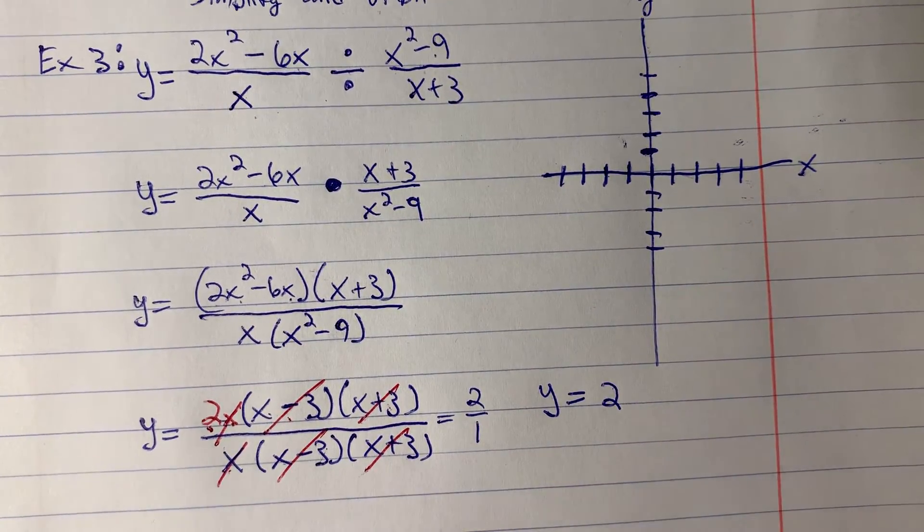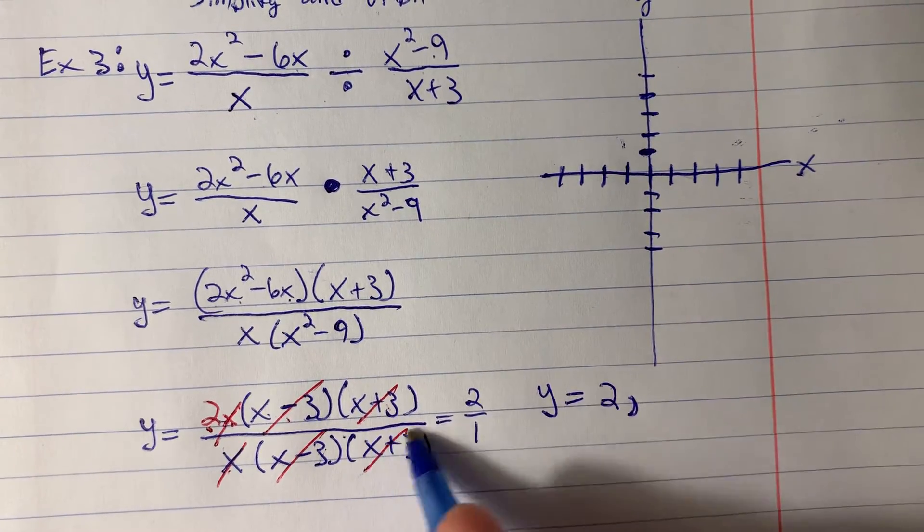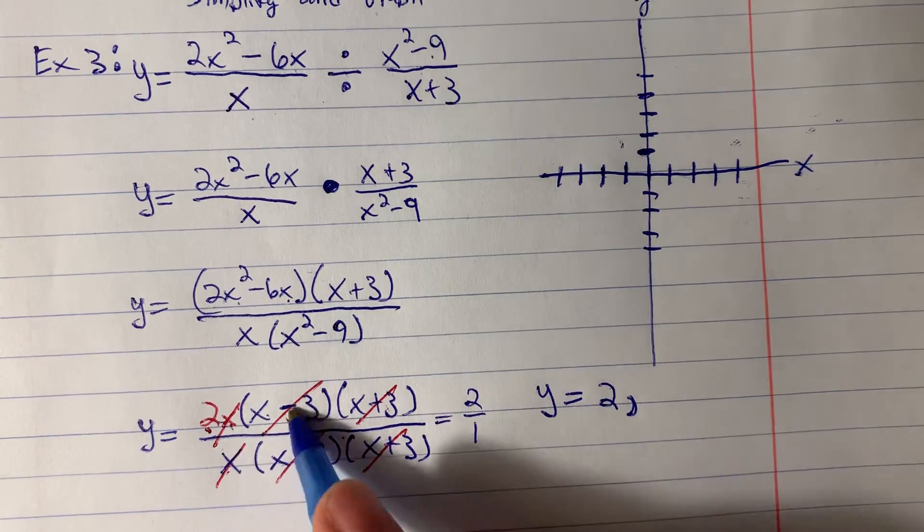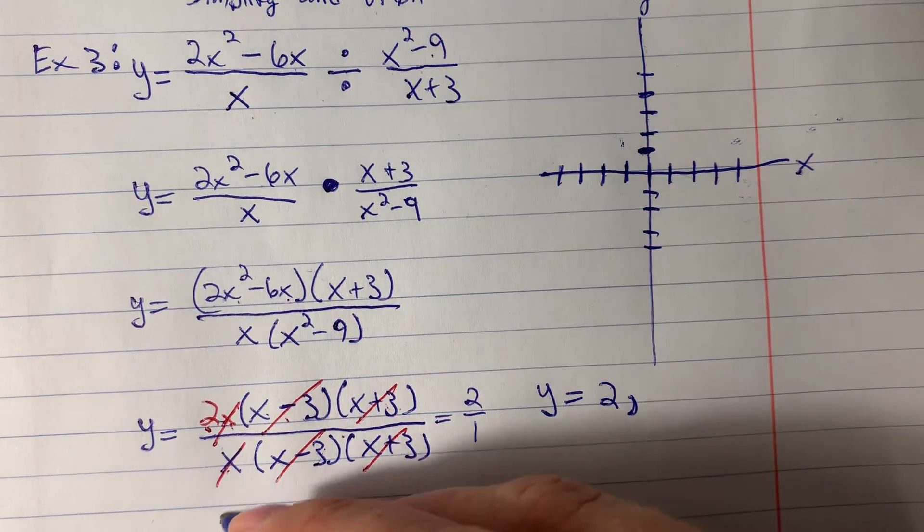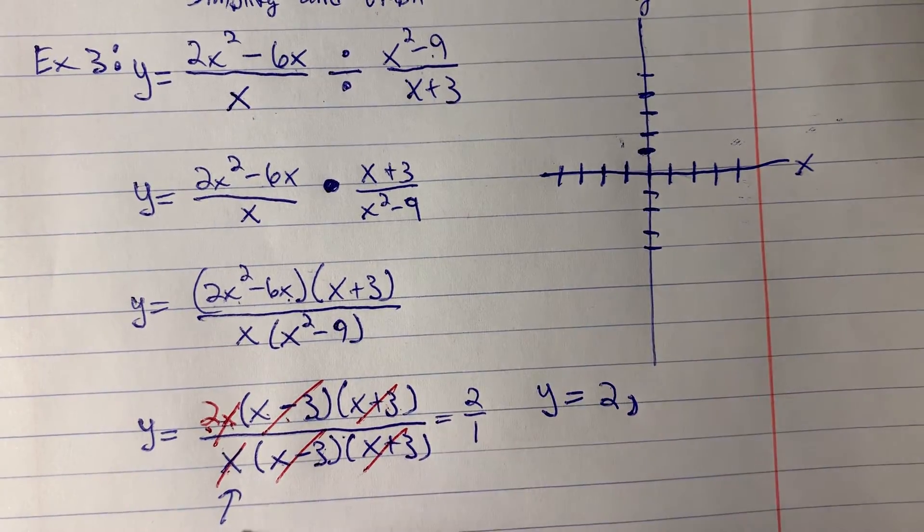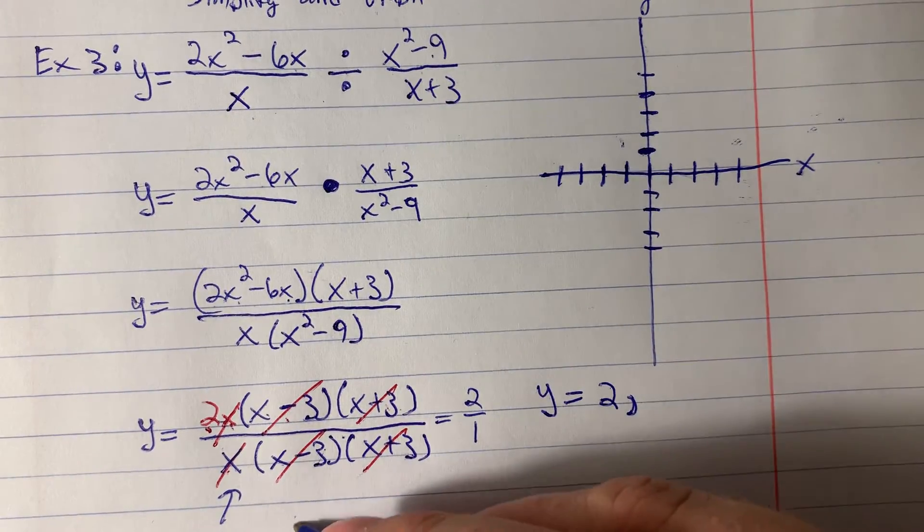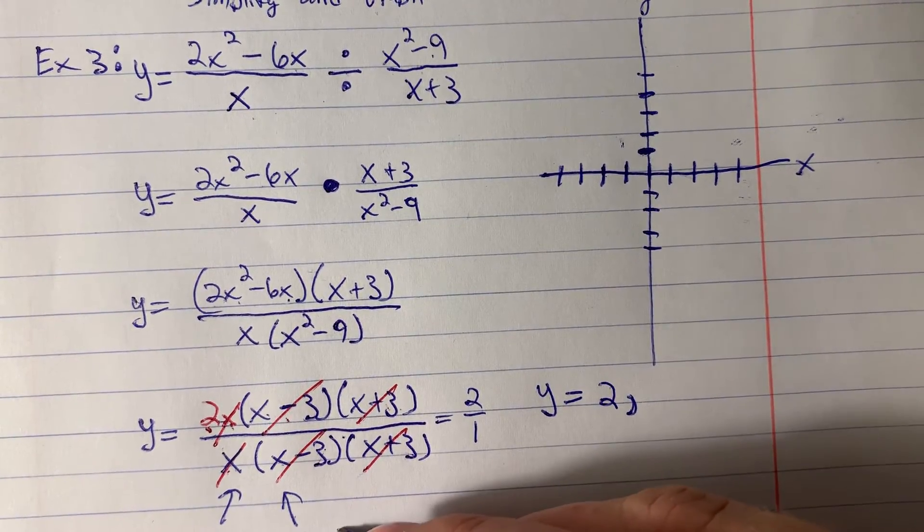But we do have to be a little bit careful because these are not exactly equal because we canceled out some of the excluded values. We are not allowed to divide by 0. And when x is 0, that would make the denominator 0 and we would be dividing by 0. We can't divide by 0.